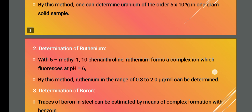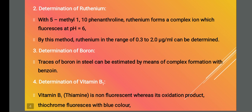The next application is determination of ruthenium. Ruthenium forms a complex with 5-methyl-1,10-phenanthroline and this complex fluoresces at a pH of 6. By this method, ruthenium in the range of 0.3 to 2 microgram per mL can be determined.